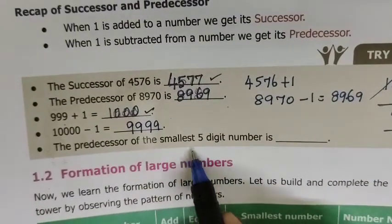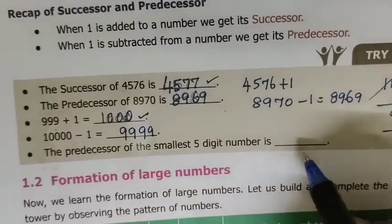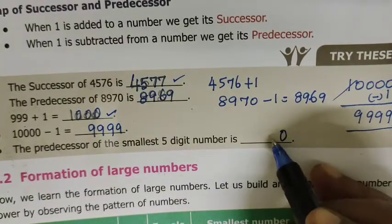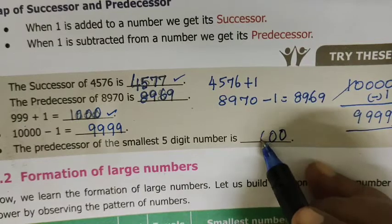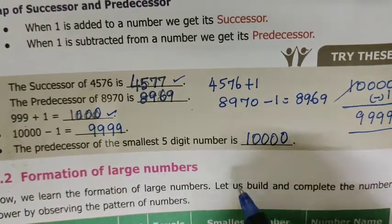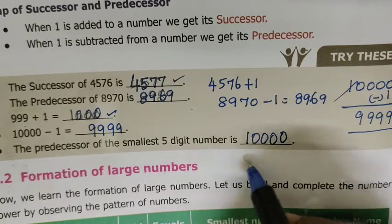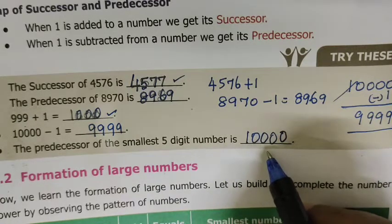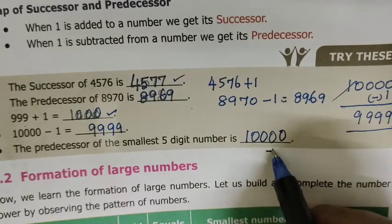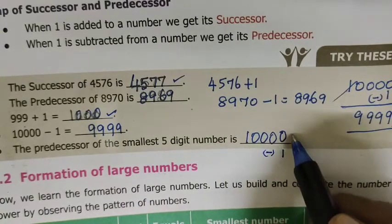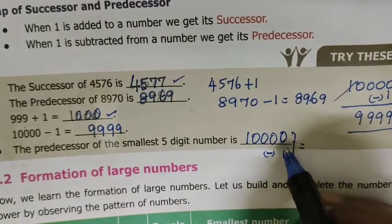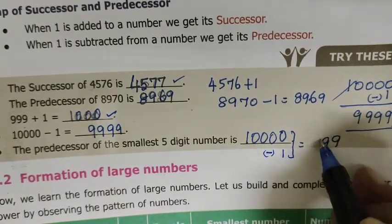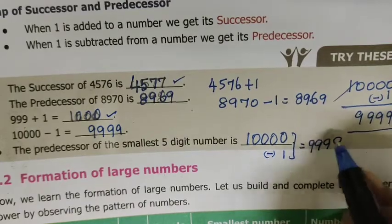The predecessor of the smallest 5-digit number: the smallest 5-digit number is 10,000. The predecessor means subtract 1. So 10,000 minus 1 equals 9,999. That is the answer.